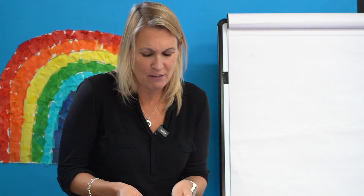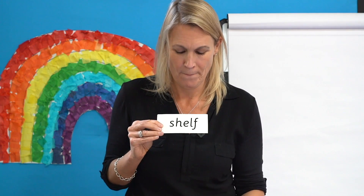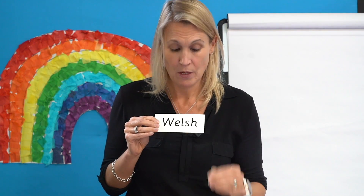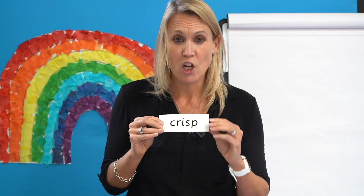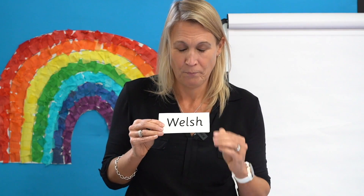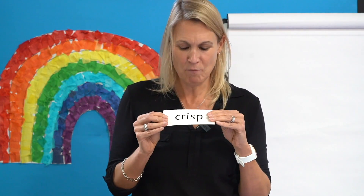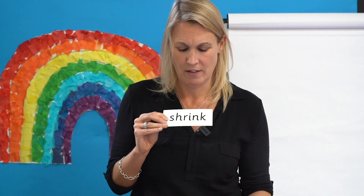Mixing up time! I'm going to mix them up so they're in a different order — let's see if you can read them again. Are you ready? Off you go. Great job. Let's check: Belt. Welsh. Shelf. Shift. Shrink. Crisp. Now guess what? I'm going to mix them up again — super speedy this time without any help. Are you ready? Go. Fantastic. Let's check — read them with me: Crisp. Shift. Welsh. Belt. Shelf. Shrink. Incredible.